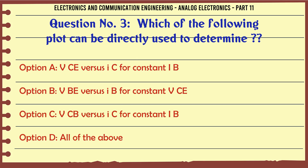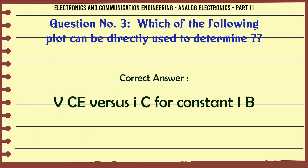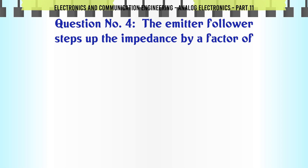Which of the following plots can be directly used to determine? A. VCE vs IC for constant IB. B. VB vs IB for constant VCE. C. VCB vs IC for constant IB. D. All of the above. The correct answer is: VCE vs IC for constant IB.